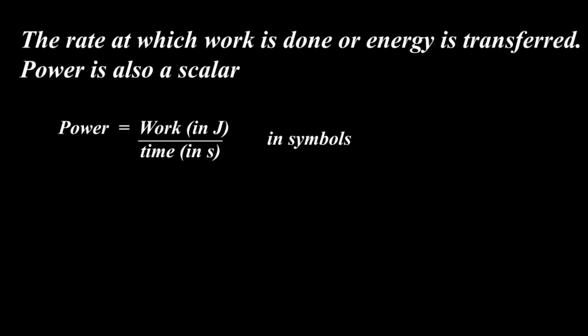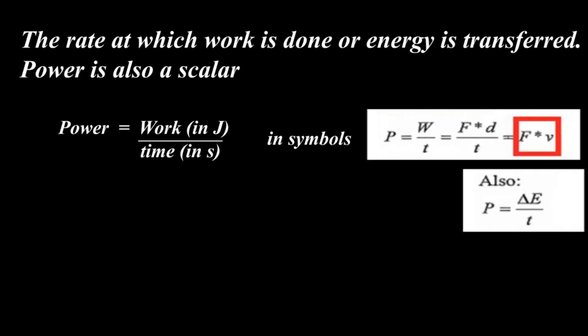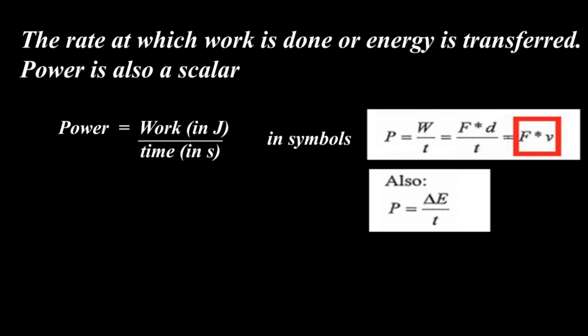Now let's look at the units in which power can be measured. Work is measured in joules and time is measured in seconds. Therefore, if we have W over T, W is in joules and T is in seconds, so the units of power become joules per second.